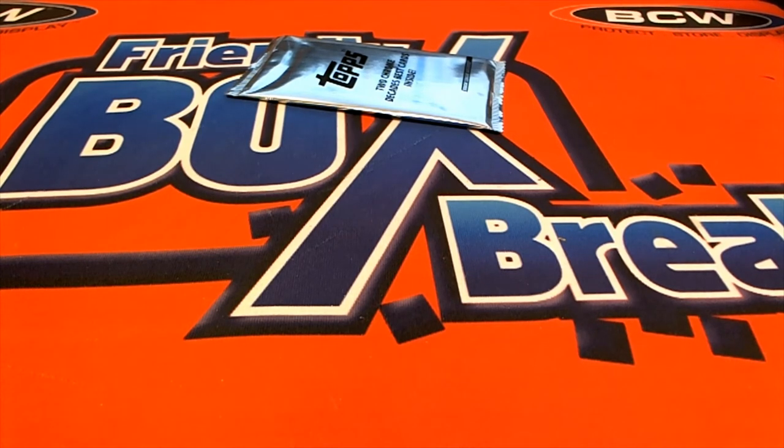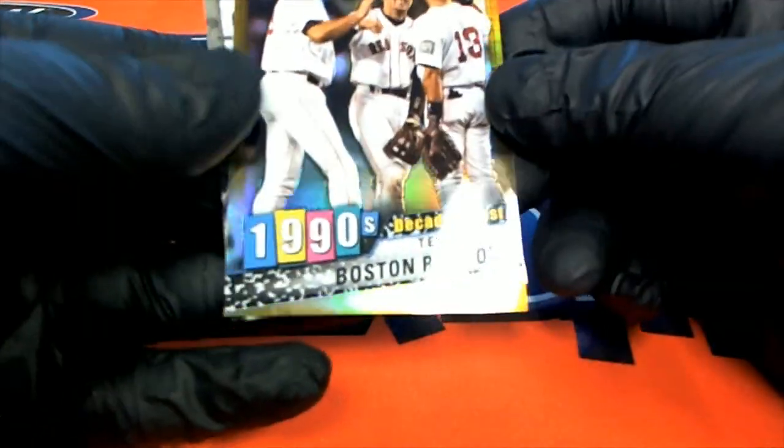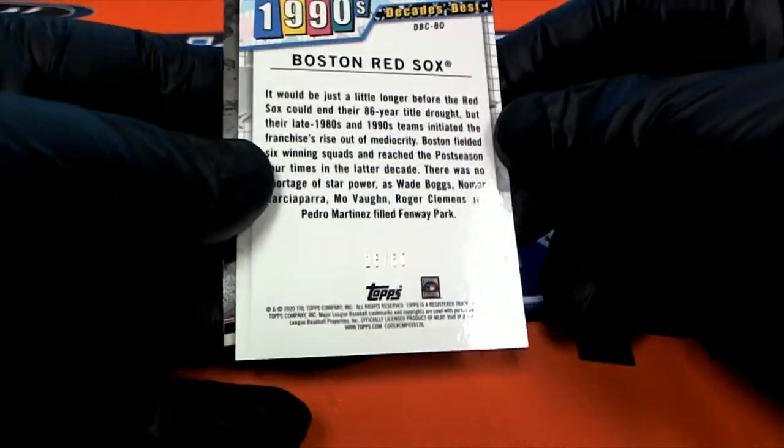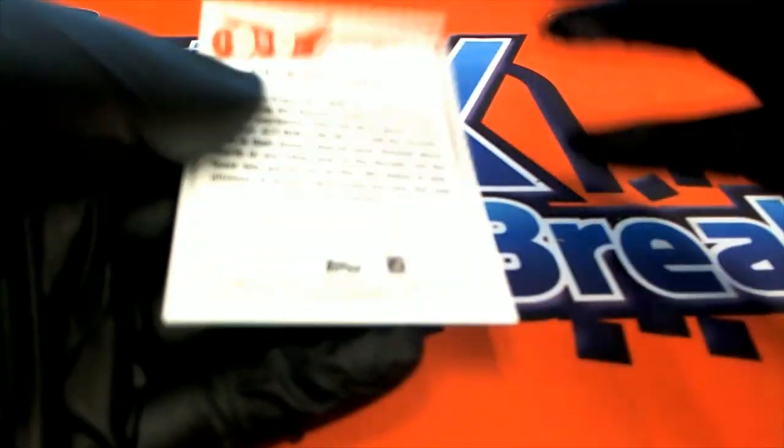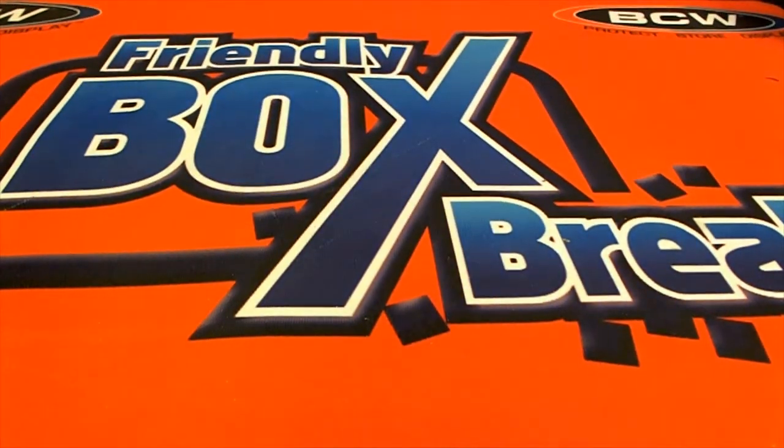And our last one is George C. Oh, where's a Decade's Best Red Sox, nice, 250. You got the Decade's Best Tigers 1950, nice. George C, thanks guys. That completes Series 2 box 209. Hop in to ten with us, thanks everybody.